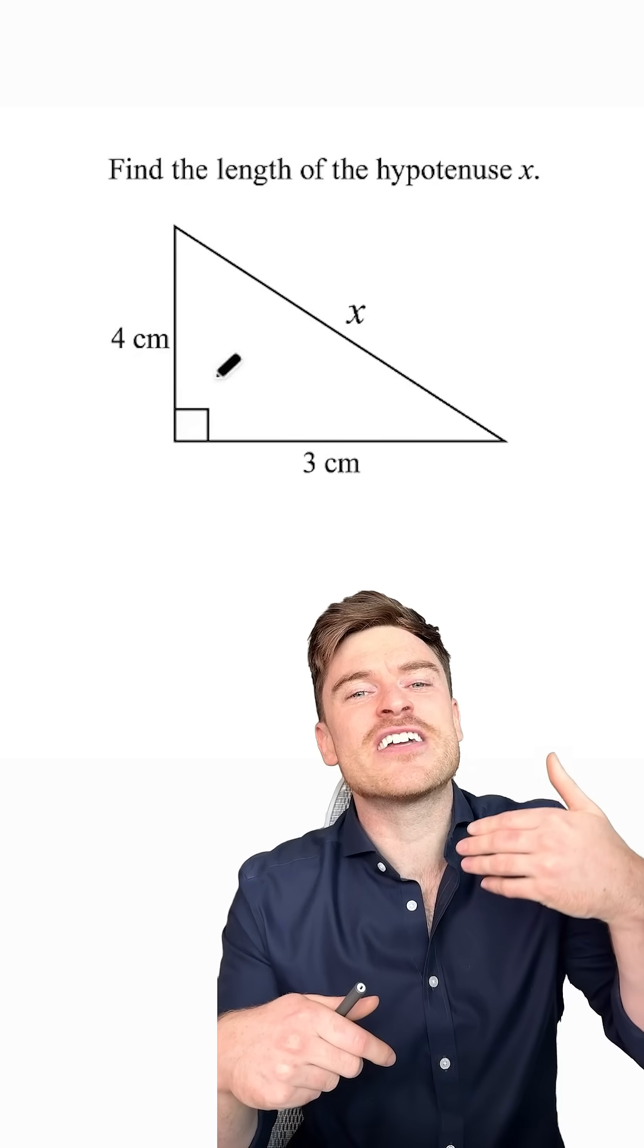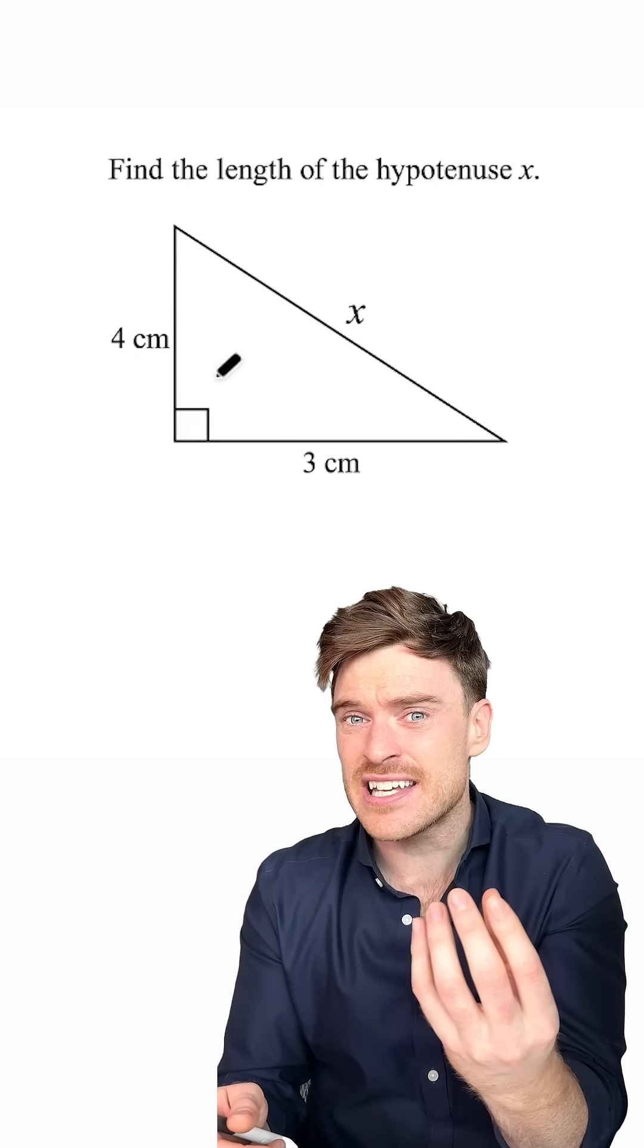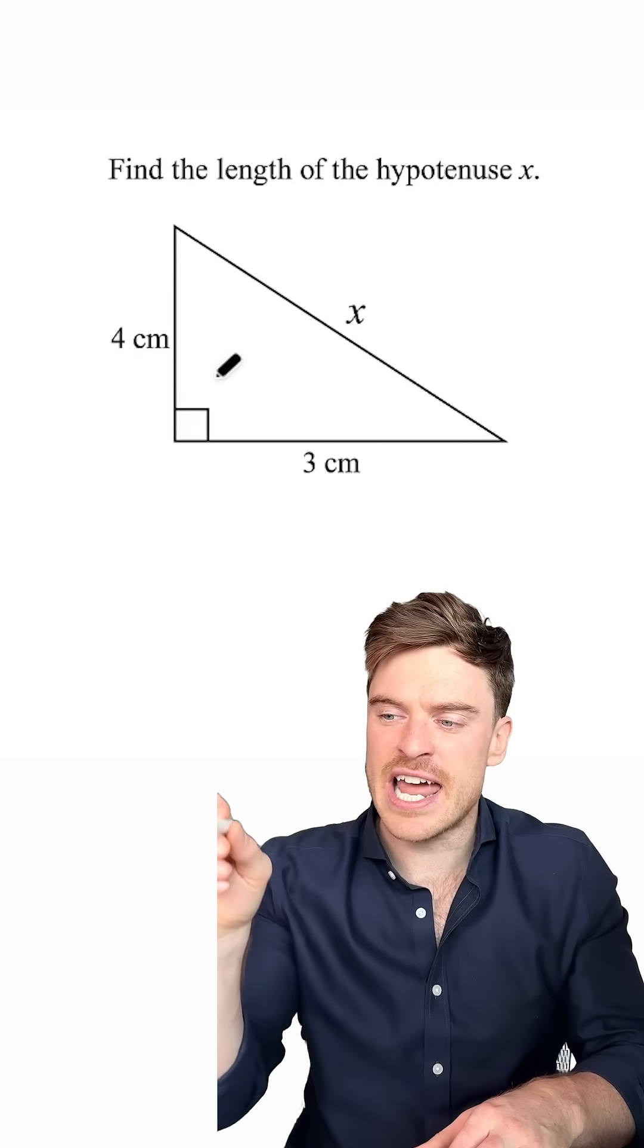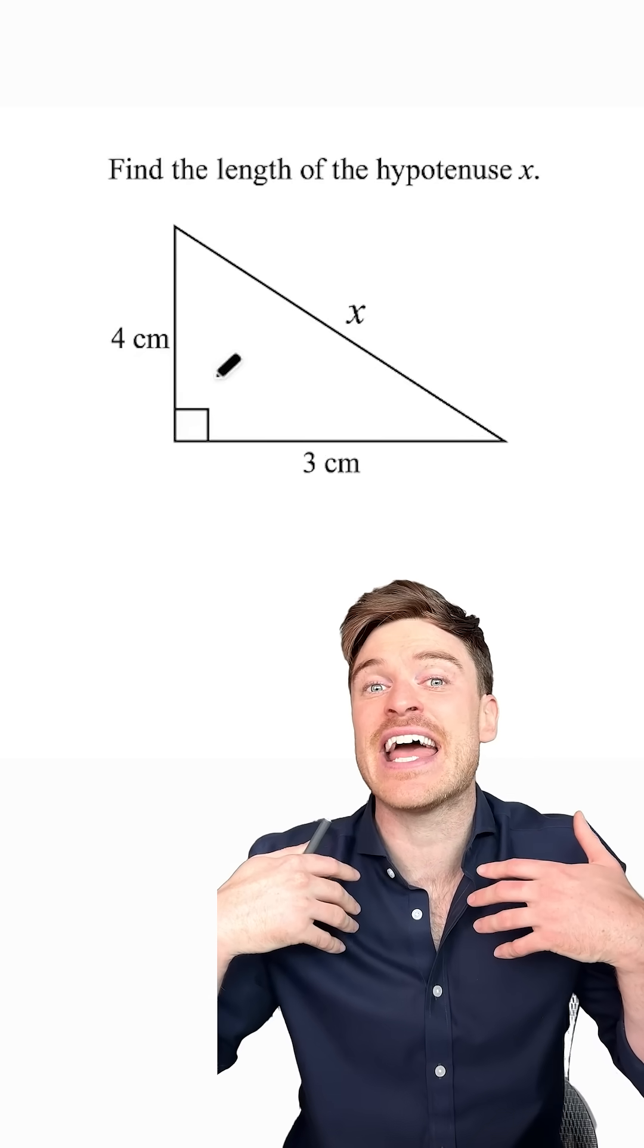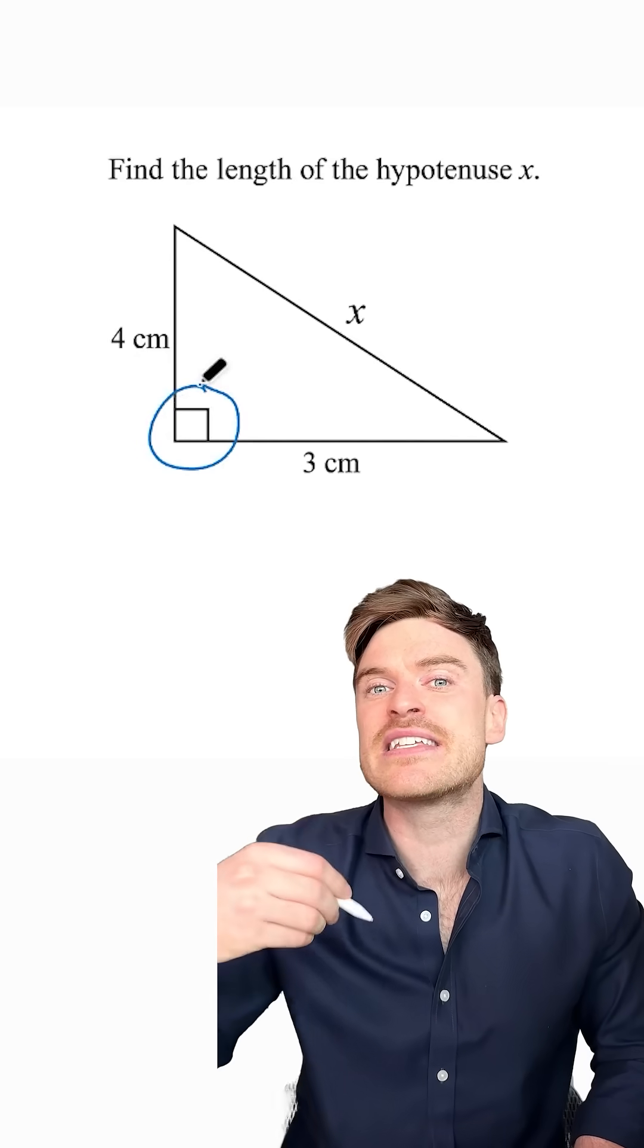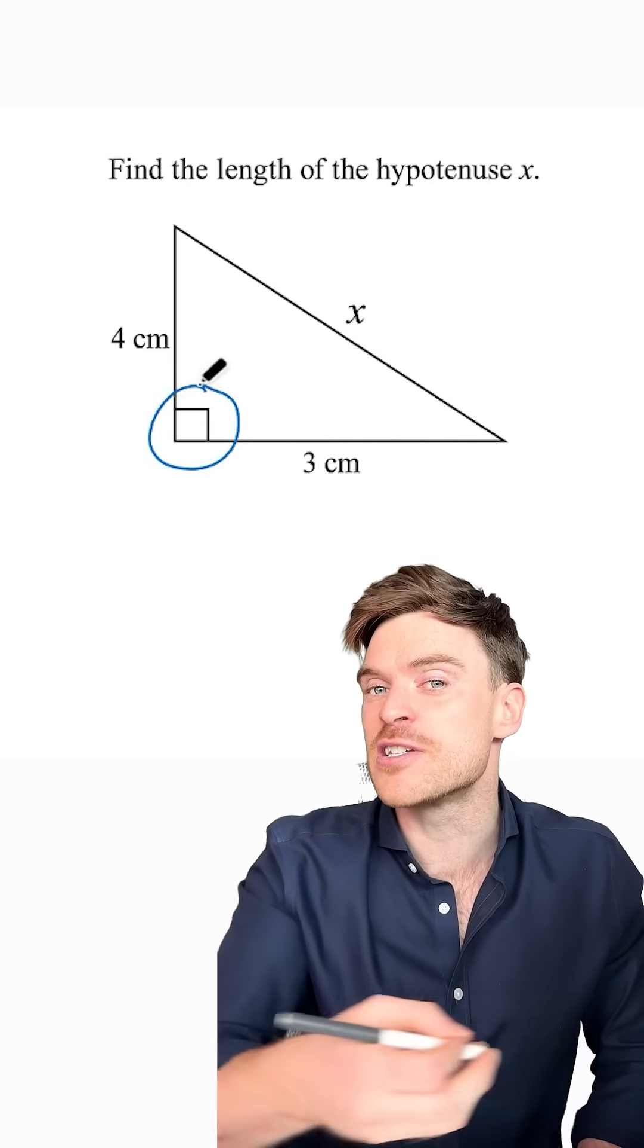Sine cos tan, if there's any mention of angles, then you use sine cos tan. If there's just the labels or the lengths of the sides, then think Pythagoras, okay? See that box in the corner? That means it's a right angle triangle and you can use Pythagoras' theorem.